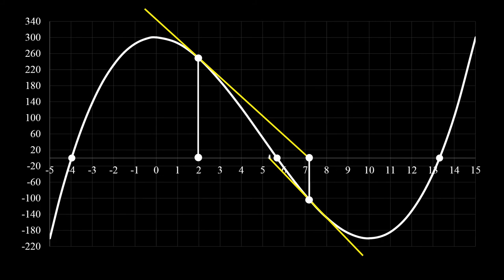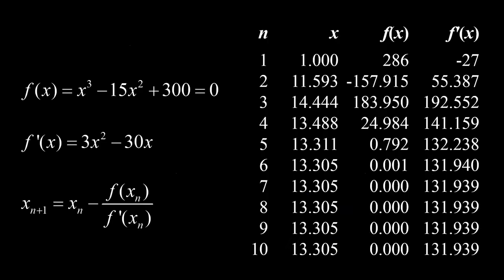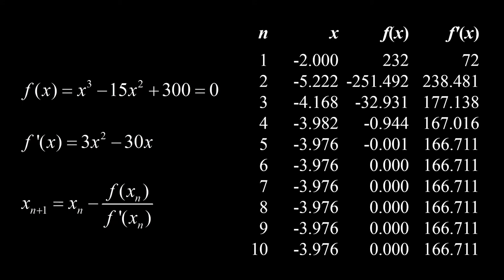Graphically, ganito ang nangyari. Kung 1 naman ang gawing unang hula, magkukonverge sa root na 13.305. Kung negative 2 ang gawing unang hula, magkukonverge sa root na negative 3.976. Kung 3 ang hula, magkukonverge sa root na 5.67. Kung 4 ang hula, magkukonverge rin sa 5.67.